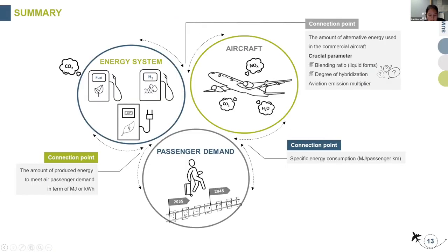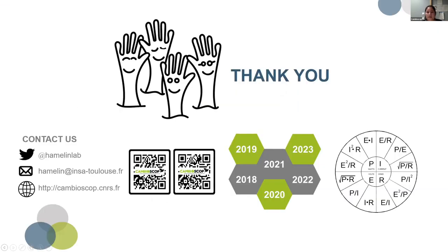In summary, for the energy system section, the potential technologies for future aviation context have been surveyed and selection criteria have been made for filtering before conducting inventory data collection. The passenger demand in terms of RPKs has been set based on the International Civil Aviation Organization long-term forecasting reports from 2018, as no updated data was available at the time of presenting. The next section to complete is the aircraft phase, finding aircraft parameters especially for hydrogen-powered aviation. Aviation emission multipliers during the cruise phase will be further discussed and applied in the LCA analysis. Thank you so much for your attention.